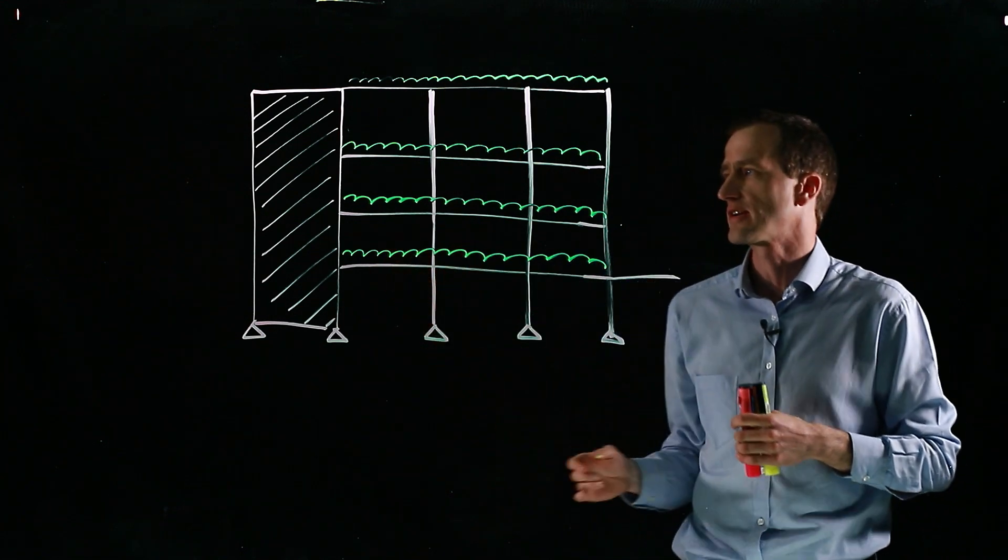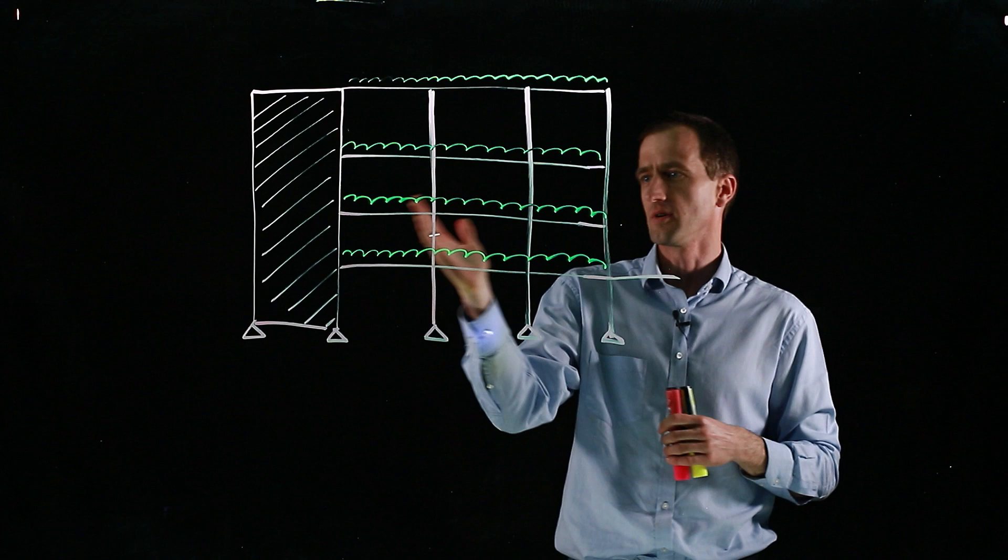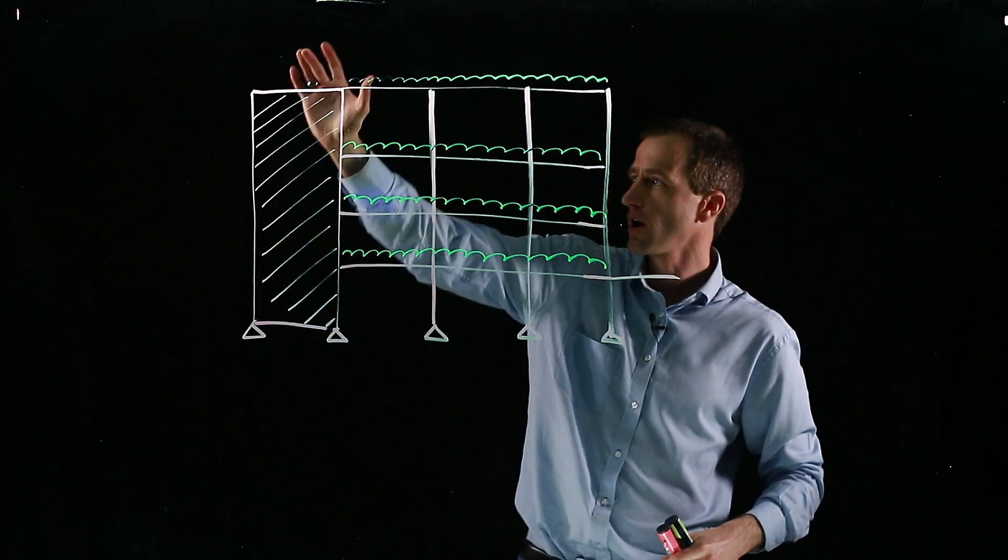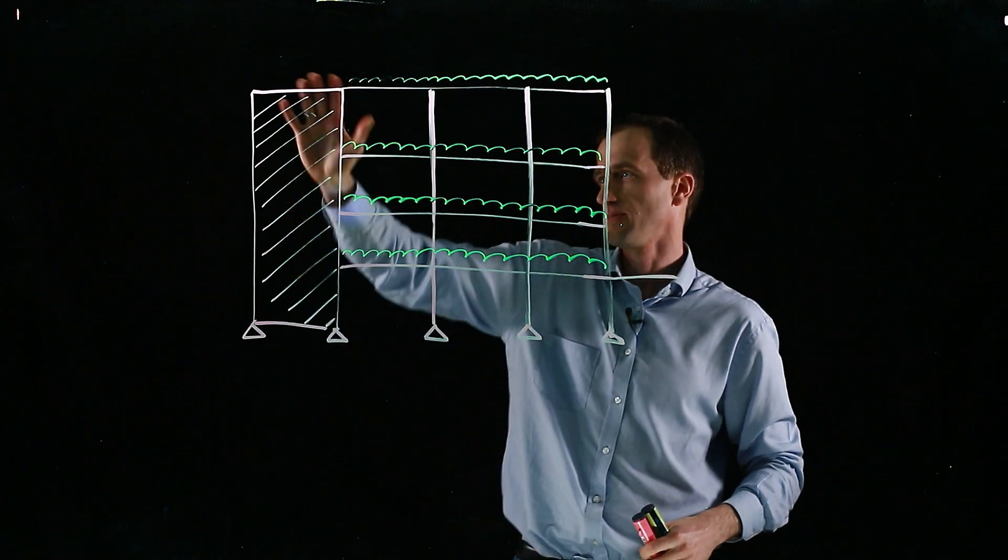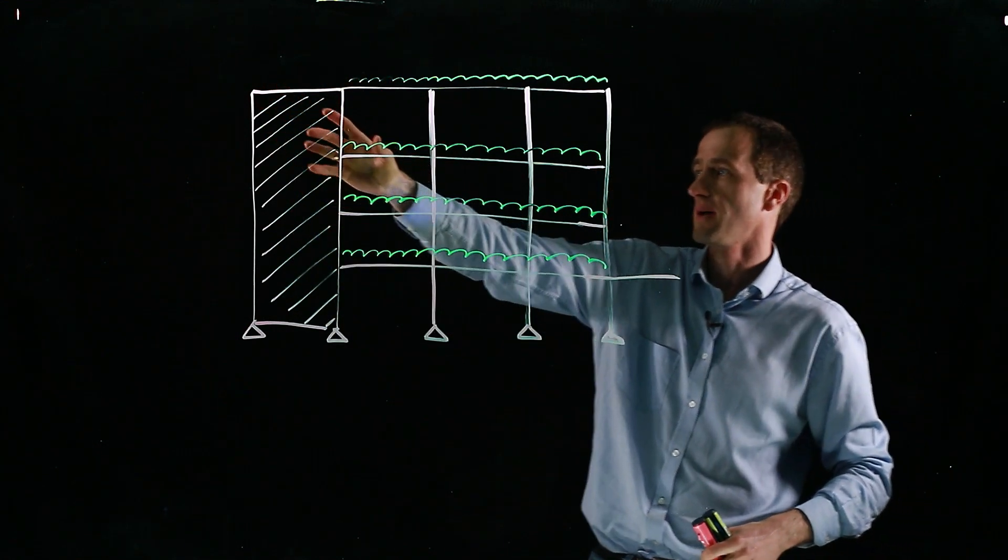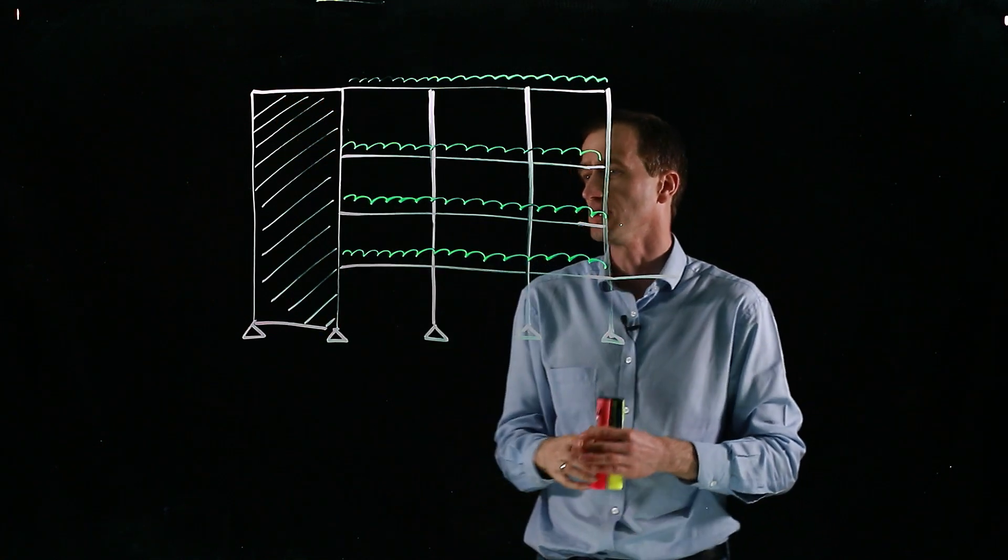I've got a simplified cross-section through a building here. We've got a multi-story structure, and then we've got some sort of lift shaft or stairwell providing lateral stability. You normally use a concrete core or various other methods to provide stability to your building.